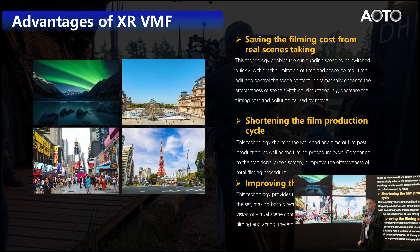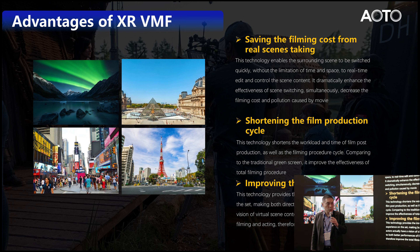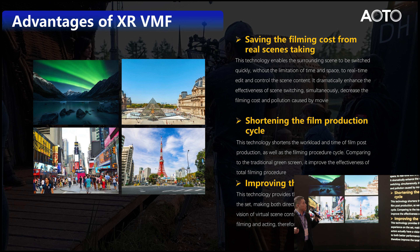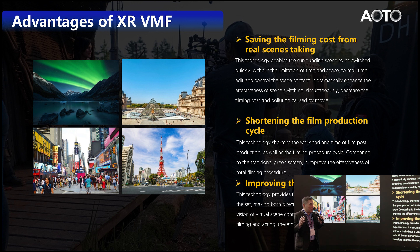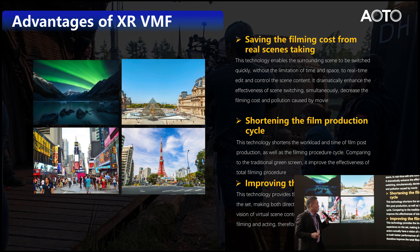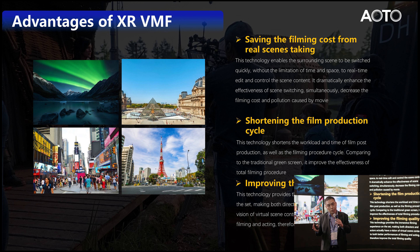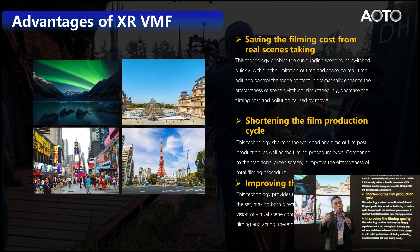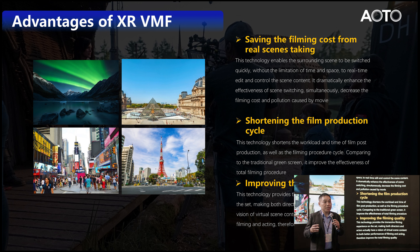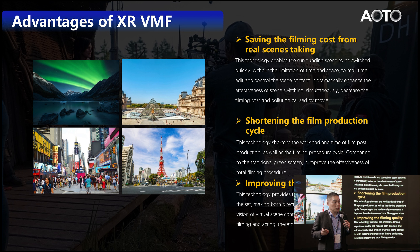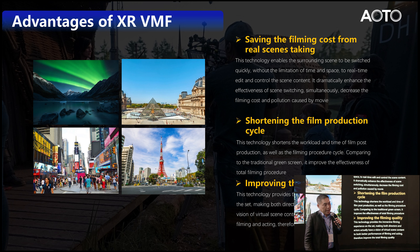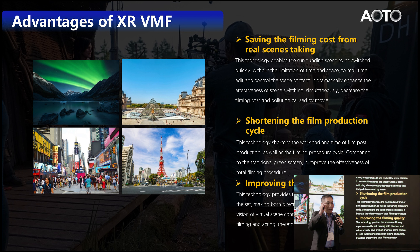The right-hand side shows the traditional green screen and blue screen, but now you use the LED screen to replace the green screen. This is the system setup. The advantage of the LED screen is that first, it saves filming cost because the investment is fairly low. Second, you can shorten the film production cycle — you just need a fairly short post-production of around three months.